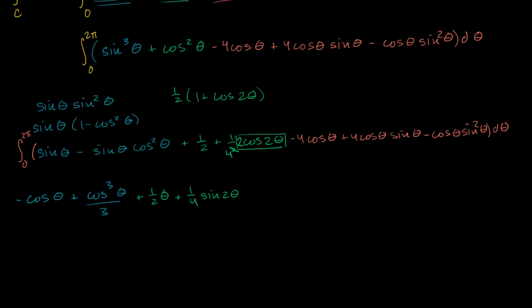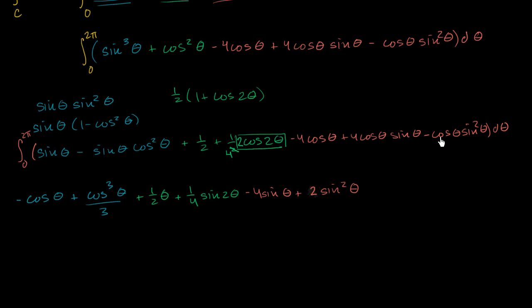The antiderivative of cosine theta is just sine theta, so we get minus 4 sine theta. For the next term, the derivative of sine theta is cosine theta, so the antiderivative is 4 sine squared theta over 2, which simplifies to 2 sine squared theta. You can verify this with the chain rule. And then for the last term, the derivative of sine theta is cosine theta, so the antiderivative is negative sine cubed theta over 3.